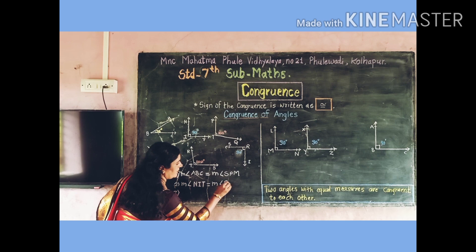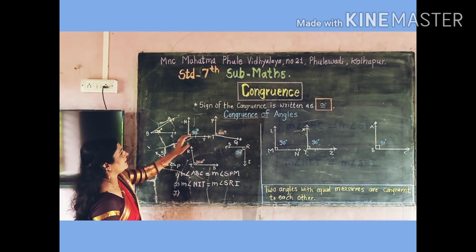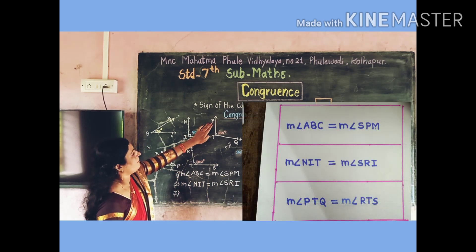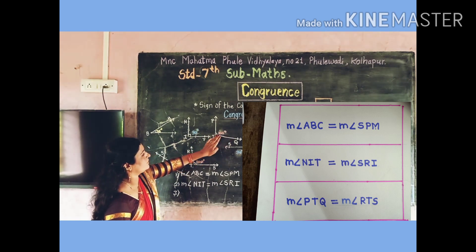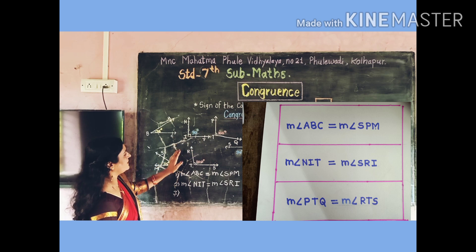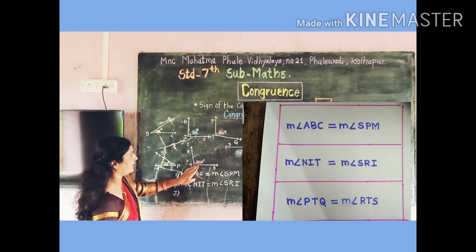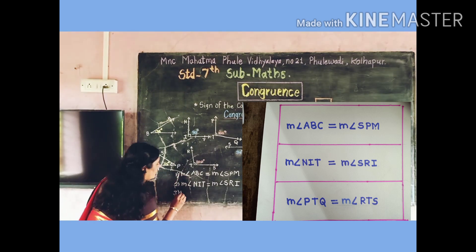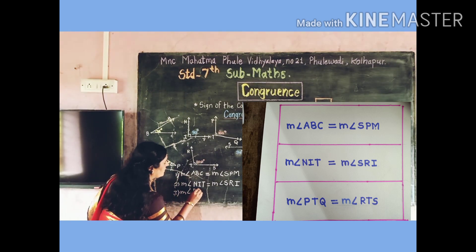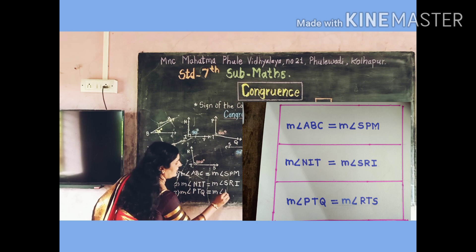Last, measurement of angle PTQ is equal to 100 degrees. Among these figures, measurement of angle RTS is also equal to 100 degrees. So here, measurement of angle PTQ is equal to measurement of angle RTS.